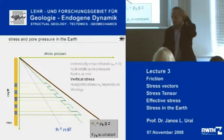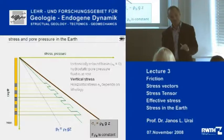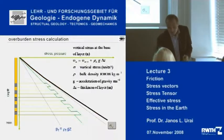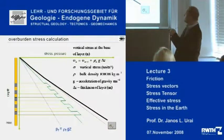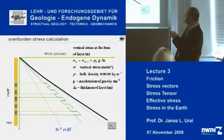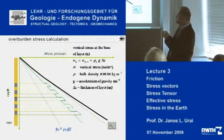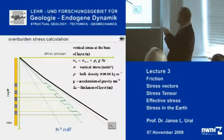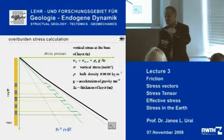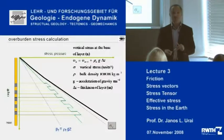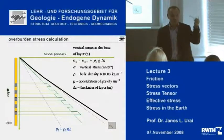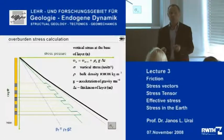If I go into a real sedimentary basin, of course the densities of different layers are different. Then what you do is calculate the vertical stress at the base of each layer: that is the vertical stress at the top of the layer, plus the thickness of that layer times the acceleration of gravity times its density. So you slice the column into layers, calculate increments of vertical stress, and add them up. This calculation is made in industry all the time — every time geologists plan a well, they calculate the vertical stress.